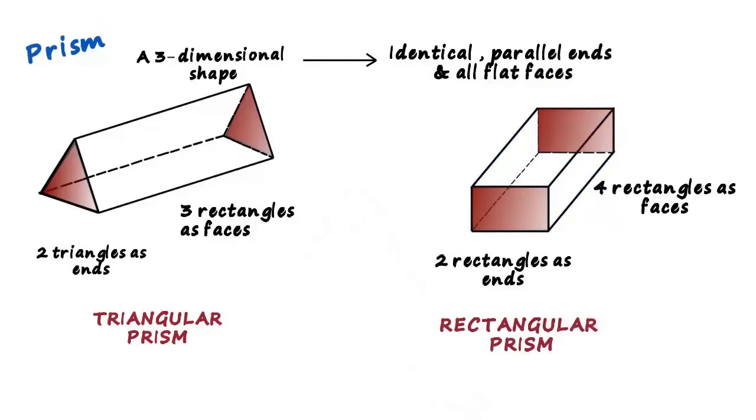So if you noticed, the prisms are defined by their ends. Triangles as its ends, triangular prism. Rectangles at its ends, rectangular prism. Look at the rectangular prism. Does this shape remind you of another three-dimensional shape? Yes, a rectangular prism is also a cuboid.